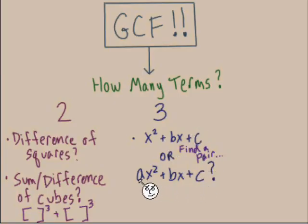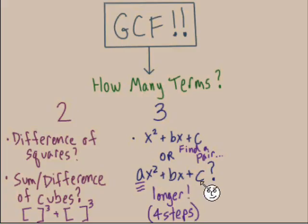And if it's the trinomial where there is a coefficient on x² that we see, we see a number here like 2, 3, or greater, that's the kind that's a little bit longer. It's about four steps where we multiply first and third, we split up that middle term, and we finish with factor by grouping.